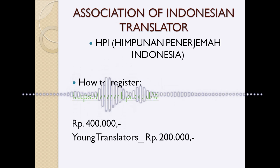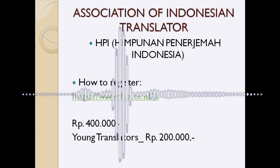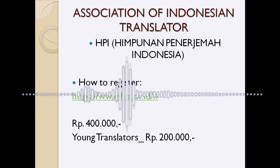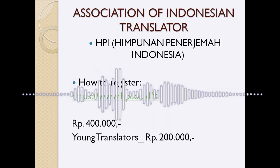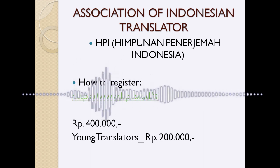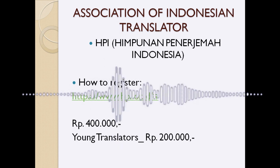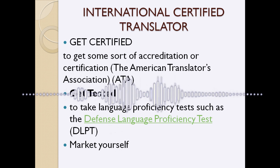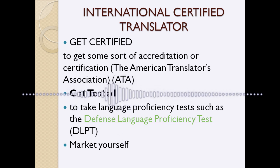Next, let's talk about the Indonesian certified translator community — yang kita sebut HPI atau Himpunan Penerjemah Indonesia — the Association of Indonesian Translators. To register as a member of HPI, you can click on the link provided in the PowerPoint. It costs 400,000 rupiah, but for young translators it costs half — 200,000 rupiah. If you are a member of HPI and want to become an internationally certified translator, you can get accreditation or certification through additional pathways.